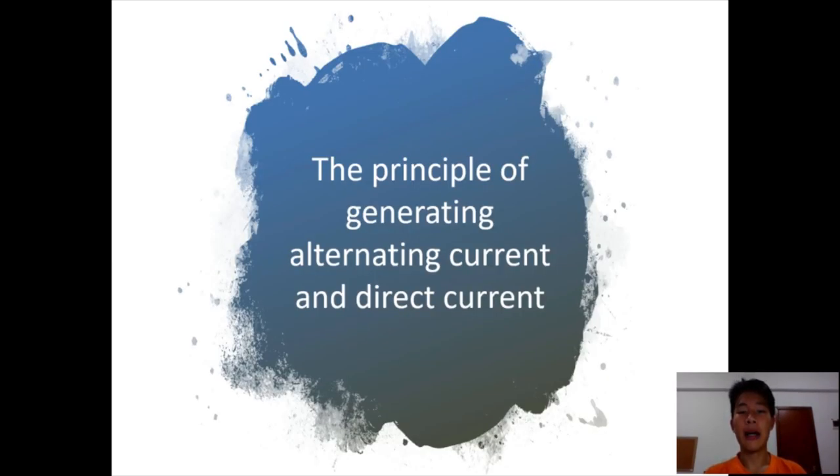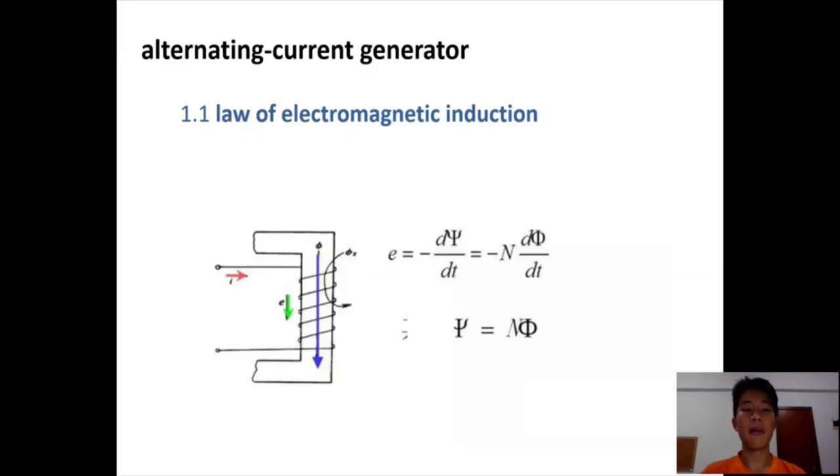First for my part, I'm going to talk about the principle of generating alternating current and direct current. I'm going to talk about the law of electromagnetic induction. Actually, the magnetic flux in the closed loop changes with time and there is inevitably an induced potential in the line graph. We call this phenomenon electromagnetic induction.